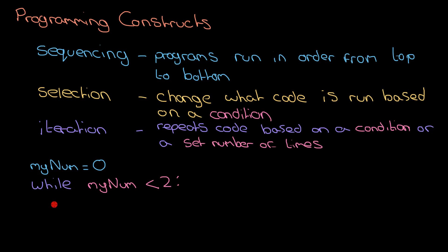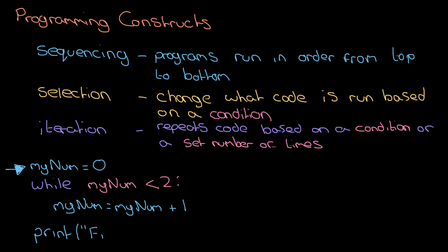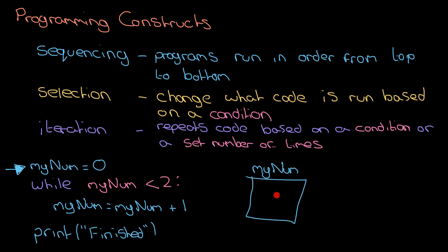Inside the loop we have: 'my_num equals my_num plus one' — we add one to my_num each time. We need to follow what happens in this program in order, because the loop makes the code repeat, which some people find confusing. I'll draw an arrow to show how the program moves. I'll also add a print statement at the bottom so we can see when it's eventually reached. We'll track my_num in a variable box — it starts at zero.